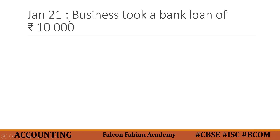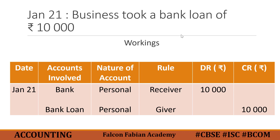The transaction is January 21: business took a bank loan of 10,000 rupees. The first step is to identify the two accounts involved. The first account is bank loan, and since this loan would be deposited in the business bank account, the two accounts involved are bank loan and bank. This format will help you with the workings before recording the entry into the journal.